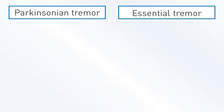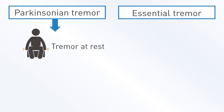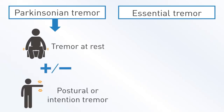Parkinsonian Tremor is characteristically a tremor present when the limb is at rest. A postural tremor may arise in between movements after a delay, and there may be a mild intention tremor.